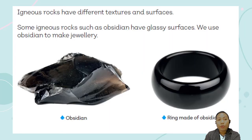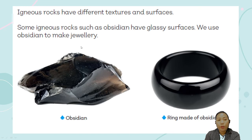Igneous rocks have different textures and surfaces. Some igneous rocks, such as obsidian, have glassy surfaces. We use obsidian to make jewelry, like this ring made of obsidian. Obsidian is an example of an igneous rock.